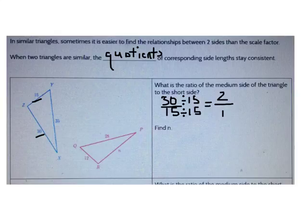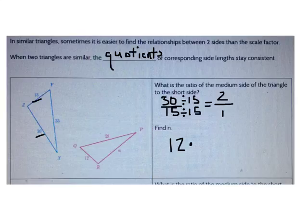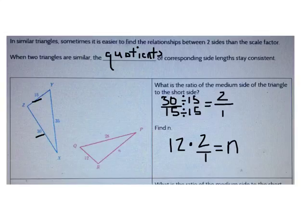I can use this knowledge to find n. I know that n is going to be 2 times as great as the short side 12. So 12 times 2 over 1 equals n. What's 12 times 2 over 1? n is 24. 24 is 2 times as large as 12.